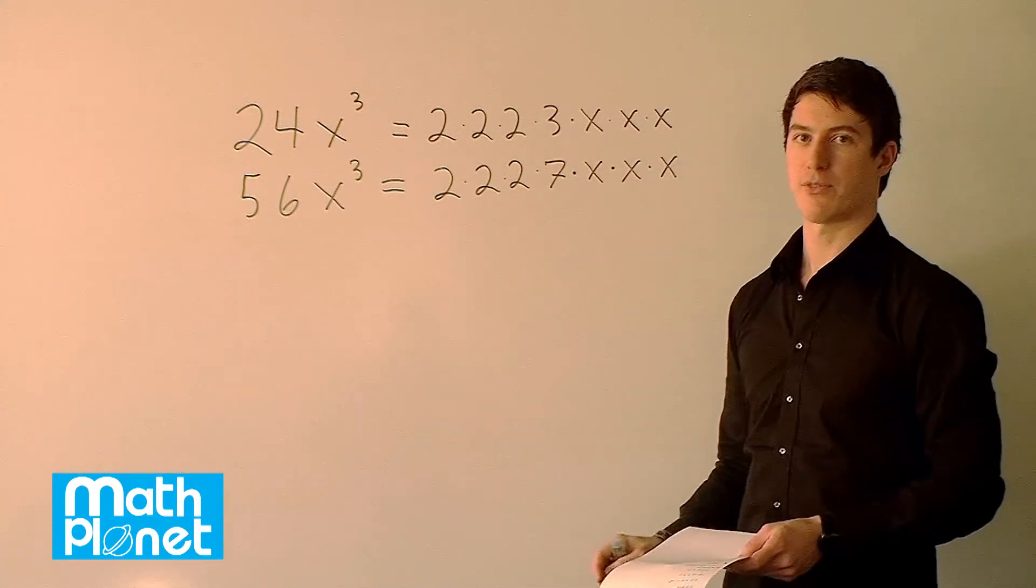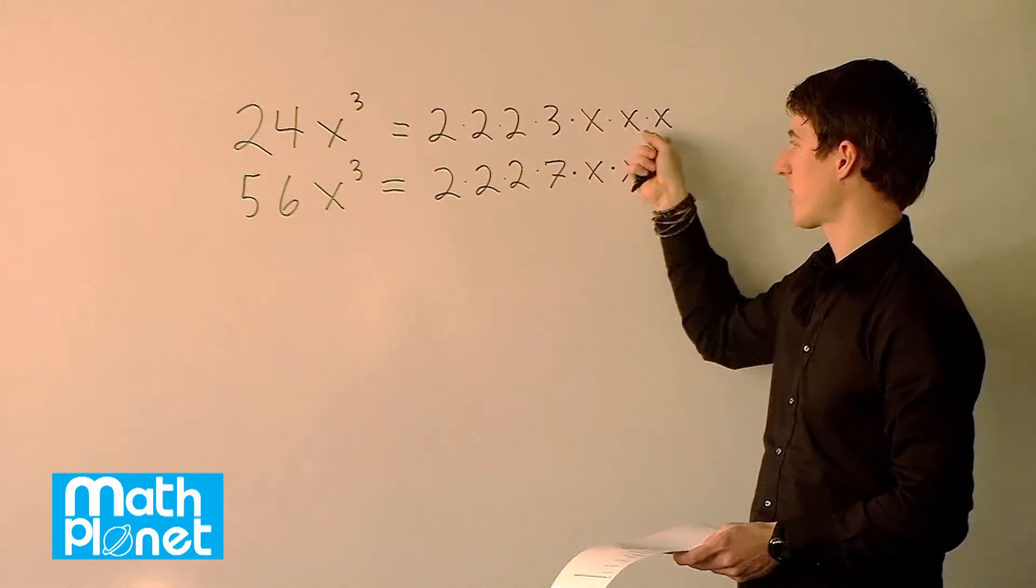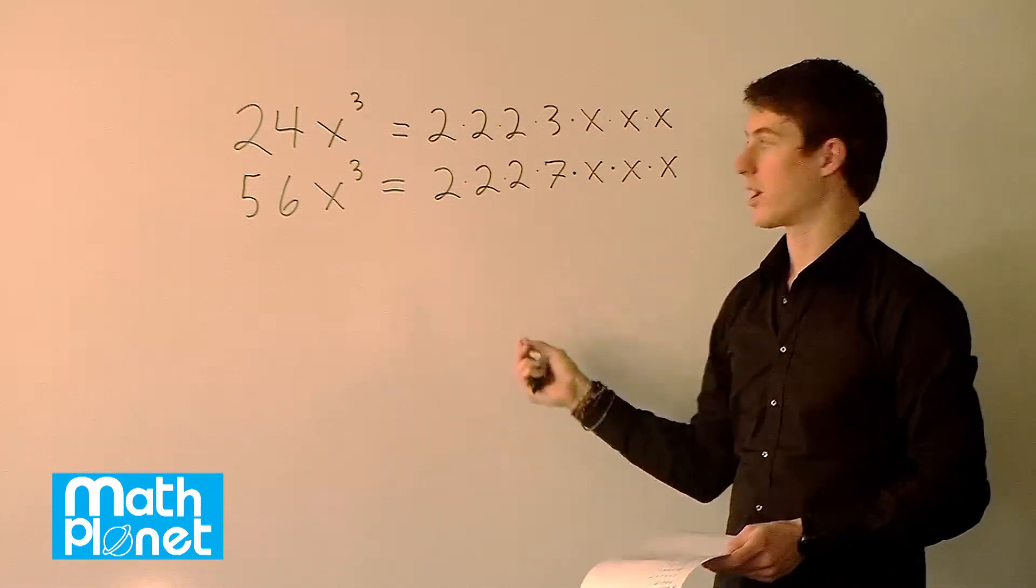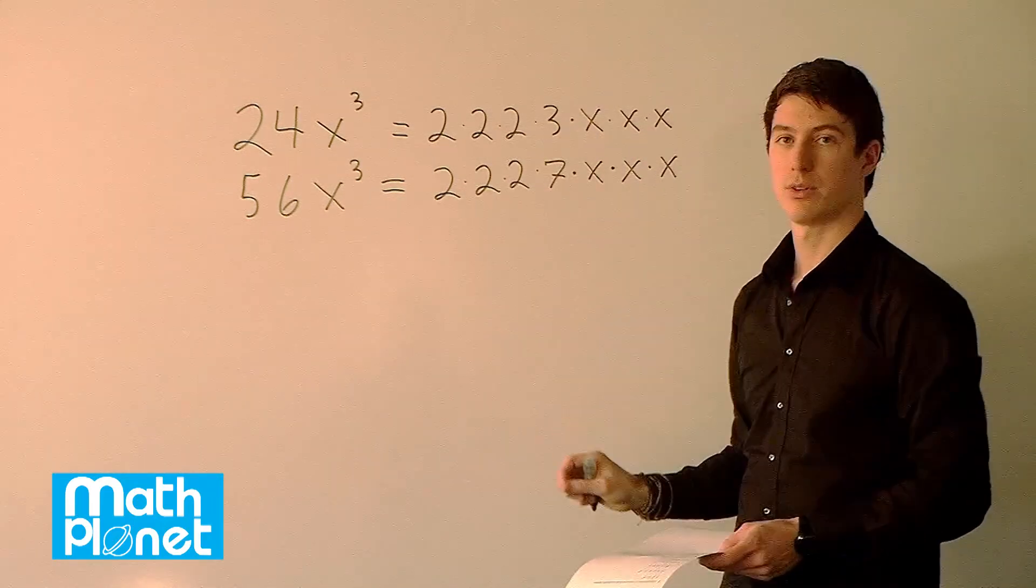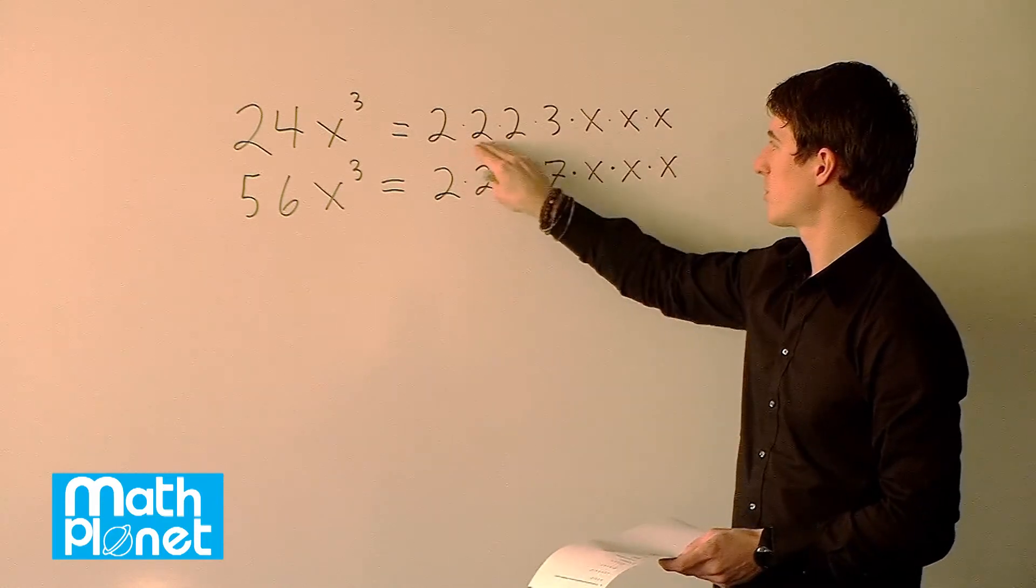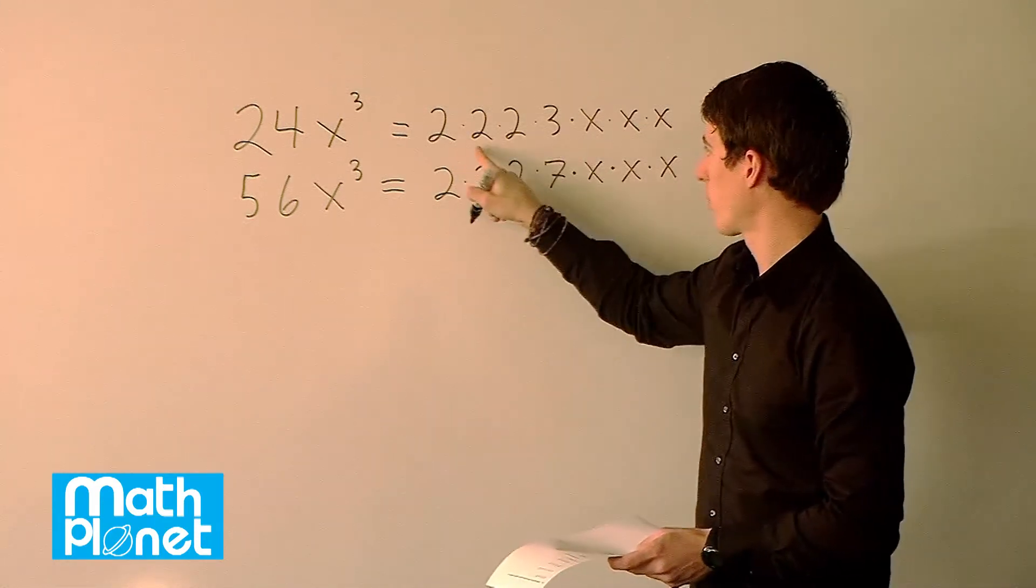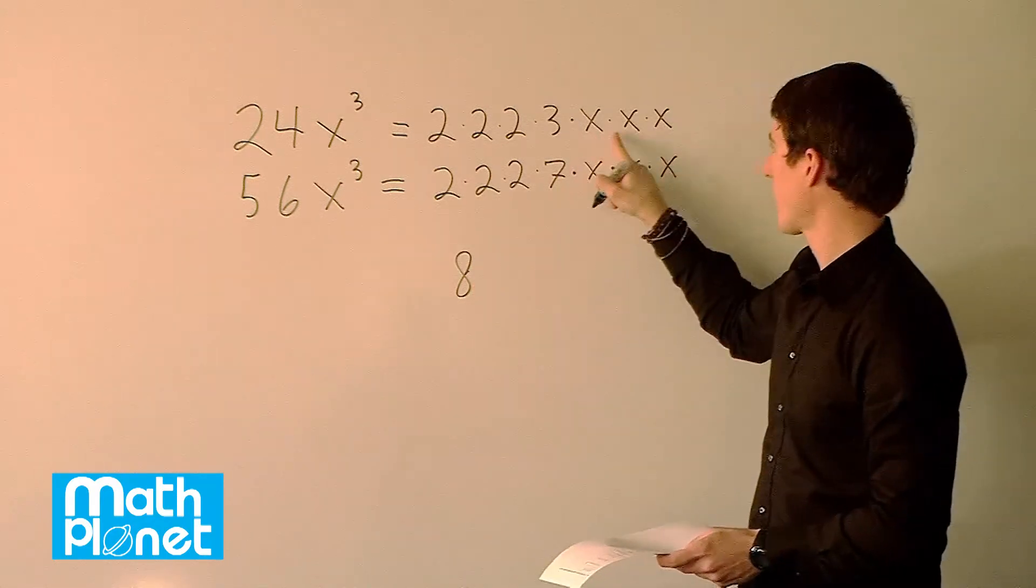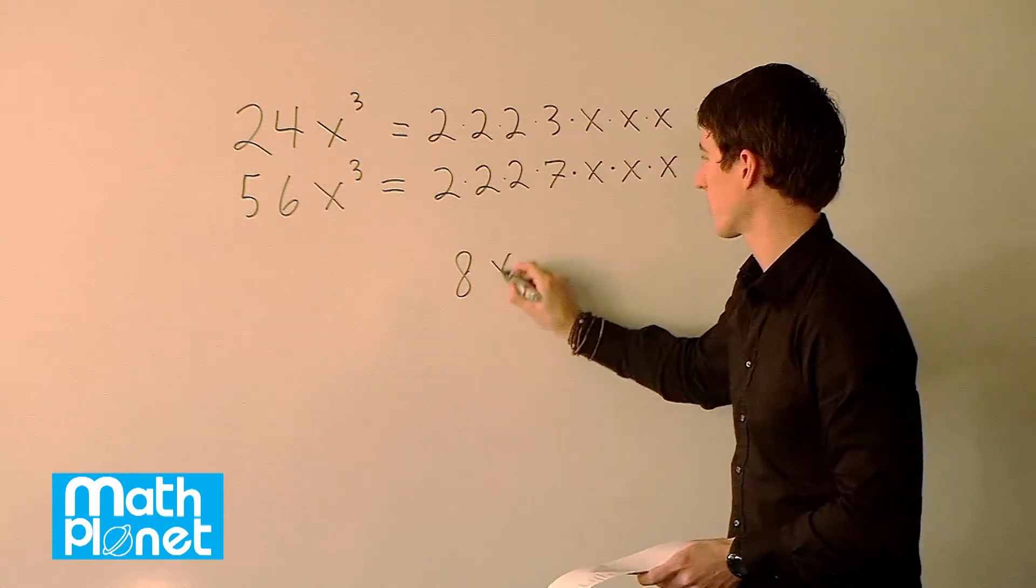So the greatest common factor is if we combine what's the same in both and just simplify it to a single factor there. So 2 times 2 times 2 is 4 and 8. So 8, and then x times x times x is x cubed.